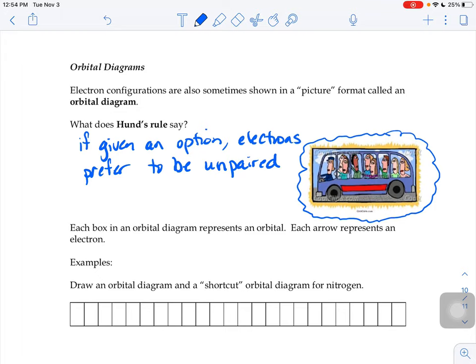Electrons don't like one another. They're all negatively charged. So they repel one another. If there's a place where it can go, where it's not forced to be paired up with another electron, then it's going to take that route.